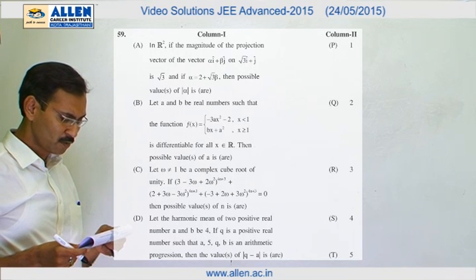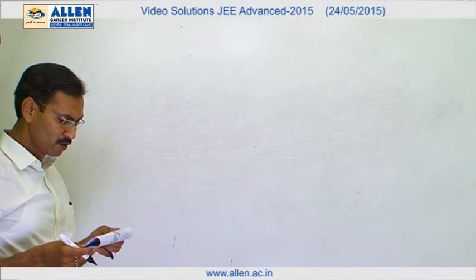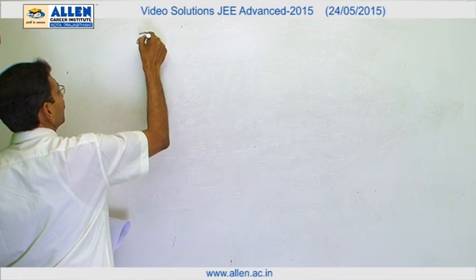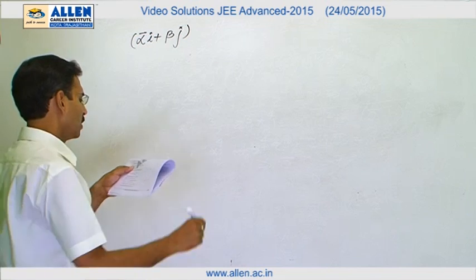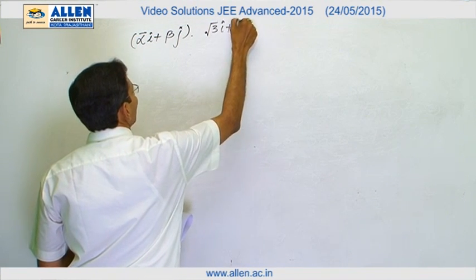59 problem has the column A part. The magnitude of projection of the vector. We will take the projection of the vector alpha i cap plus beta j cap over root 3 i cap plus j cap.